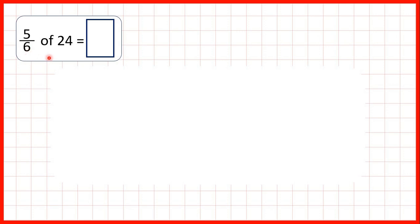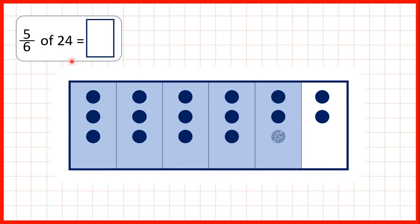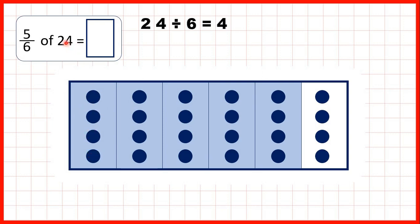Then we needed to find 5 sixths of 24. To show 5 sixths, we can split our fraction bar into 6 parts, and we find 5 sixths, so we can colour in 5 of those 6 pieces. If we share out 24 counters between the sixths, we can see that we have 4 counters in each sixth, and that's why we did 24 divided by 6 to get 4. But that's 1 sixth, and we needed to find 5 sixths, so we multiplied that 4 by 5 to get 20. You can see we have 4 in each sixth, and because we have 5 sixths, we have 4, 8, 12, 16, 20 counters in our shaded section, so our answer is 20.